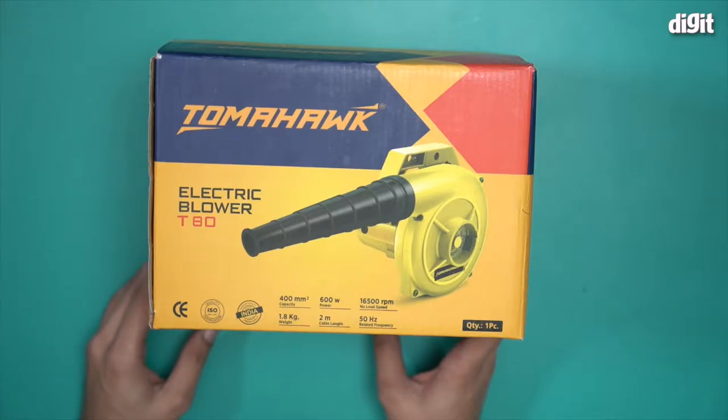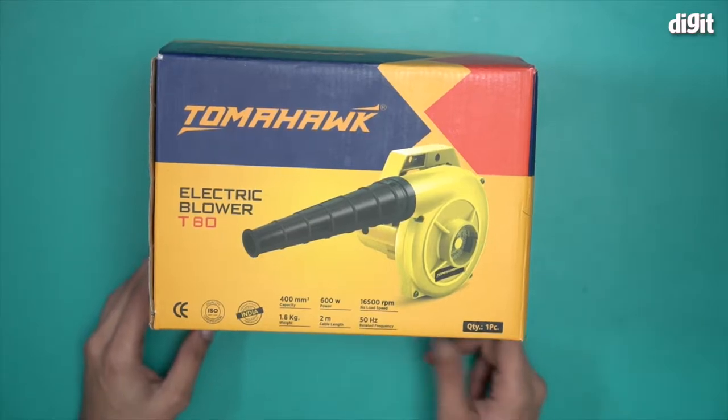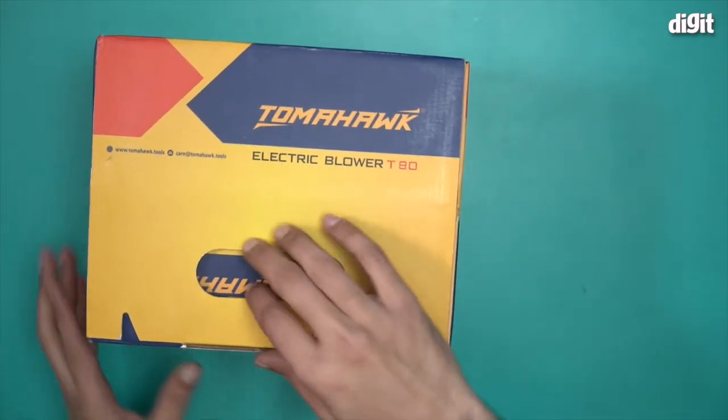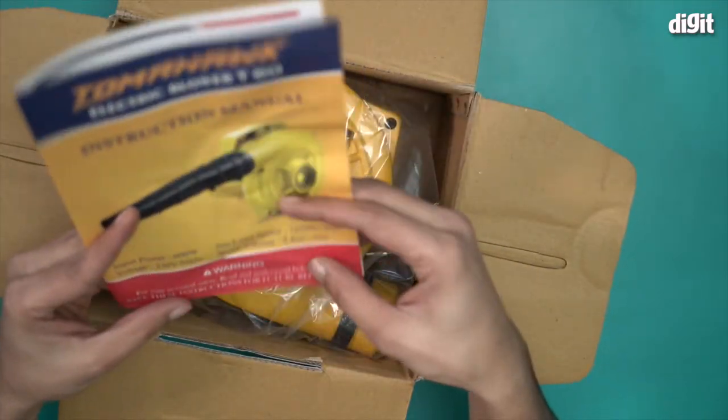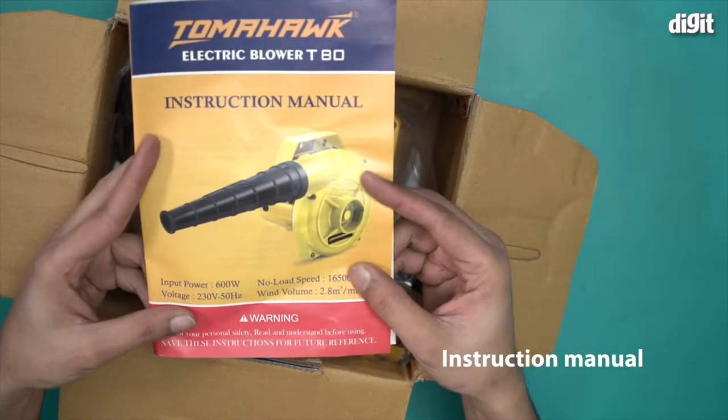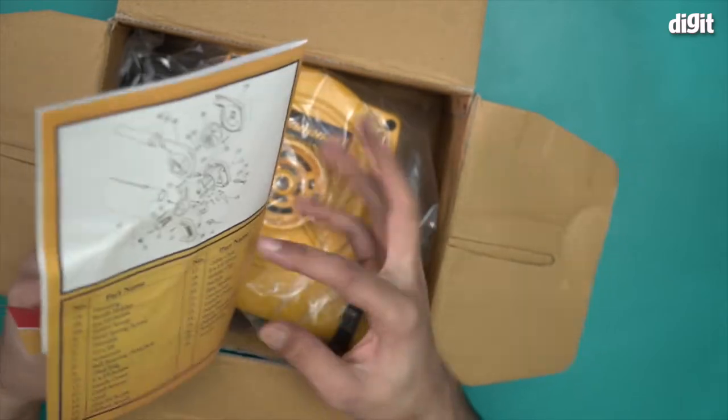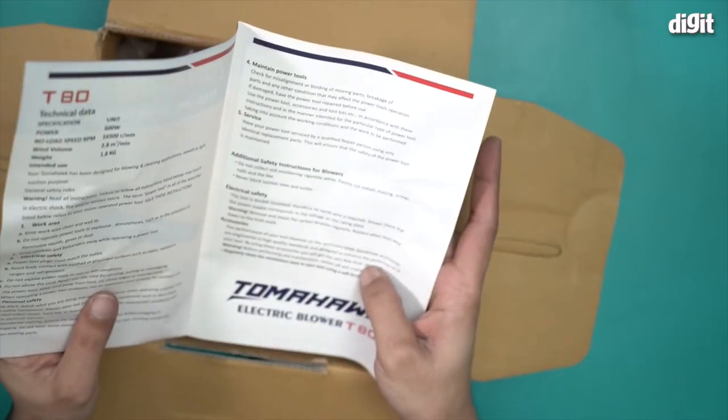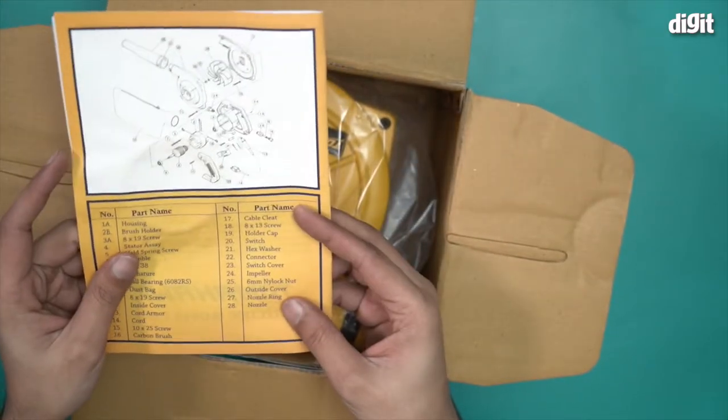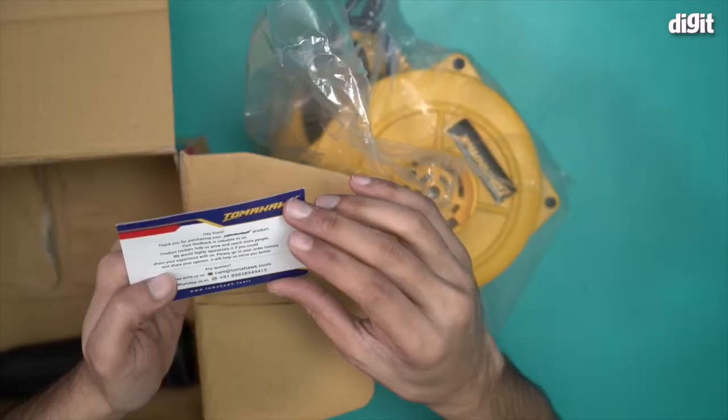I'll open this box and show you what's inside. Right on top we have the instruction manual for the T-80. Everything you want to know—technical data, specifications, safety information—is all given here. There's also a thank you note from Tomahawk.